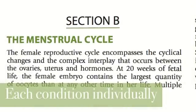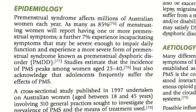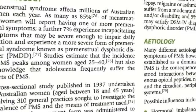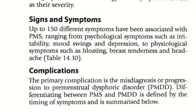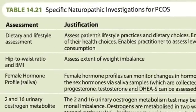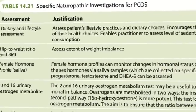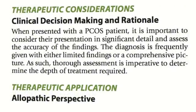In Section B, the discussion covers each relevant condition individually. Within the discussion for each condition, the reader is provided with a comprehensive overview, which includes epidemiology, classification, etiology, overview of the condition, pathogenesis, signs and symptoms, complications, diagnosis and differential diagnosis, naturopathic diagnosis, and relevant investigations — both naturopathic and allopathic.